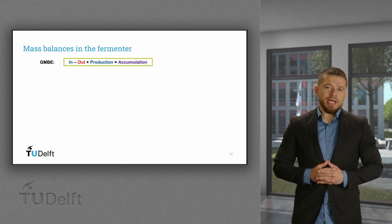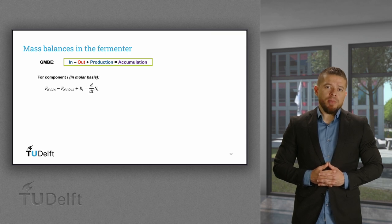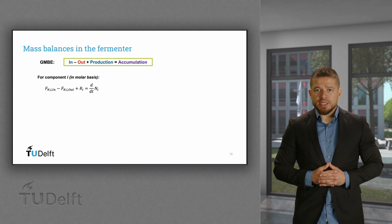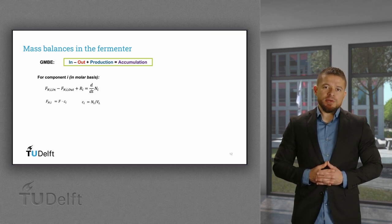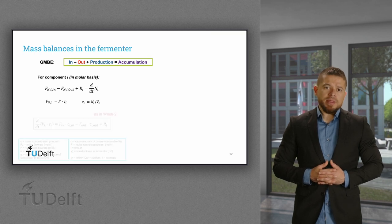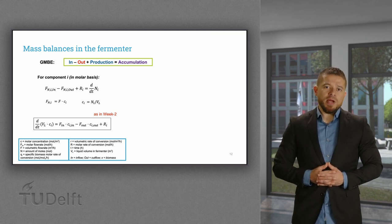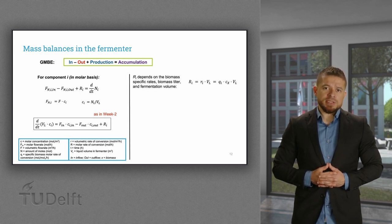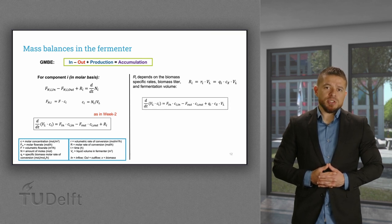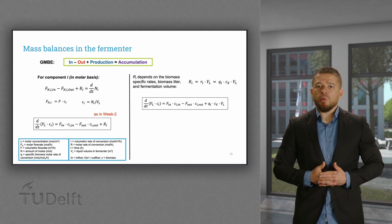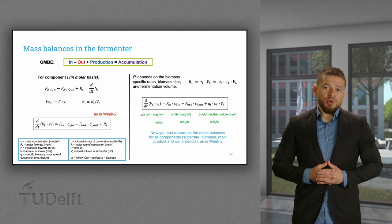With this information, we can check the mass balances for the fermenter and apply the general mass balance equation by component in a molar basis. We can also express the individual molar flows in terms of molar concentrations and the fermentation volume. We then obtain the same expression for mass balances as in week 2, where R stands for the molar rate of conversion of each component and depends on the mass-specific rates, biomass titer, and fermentation volume. This gives us the generic equation for mass balances by components in the fermenter, expressed in a molar basis. You can reproduce the mass balances for all components as in week 2.